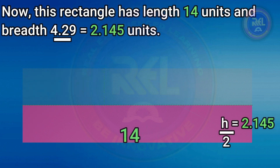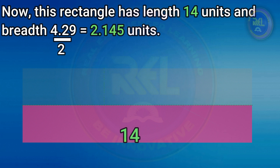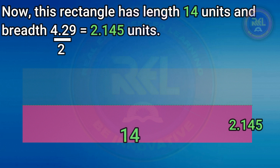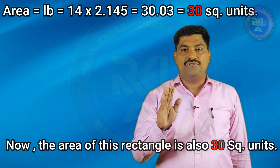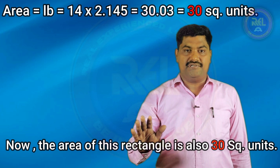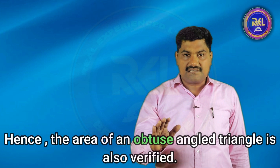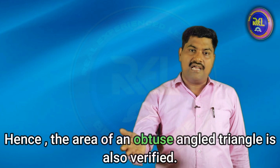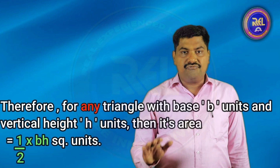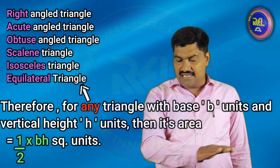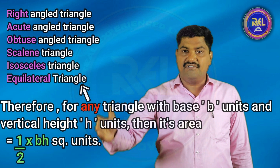Now this rectangle has length 14 units and breadth 4.29 by 2, equal to 2.145 units. The area of this rectangle is also 30 square units. Hence the area of an obtuse angled triangle is also verified.